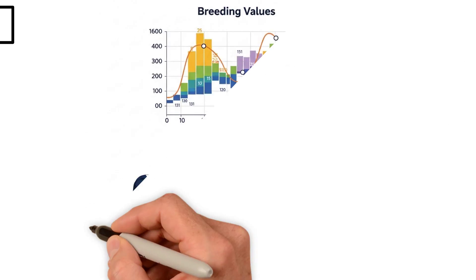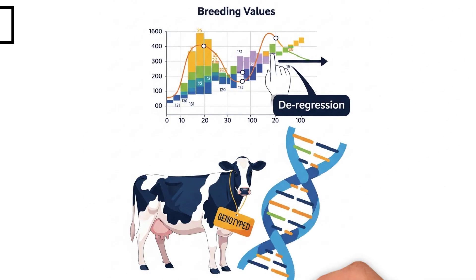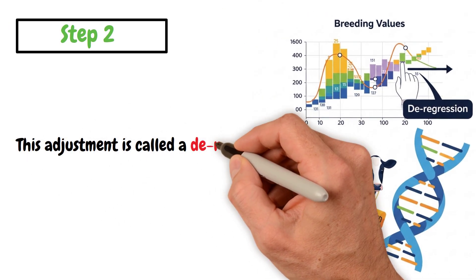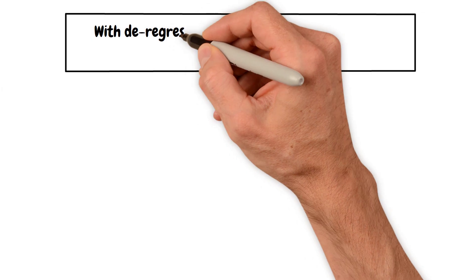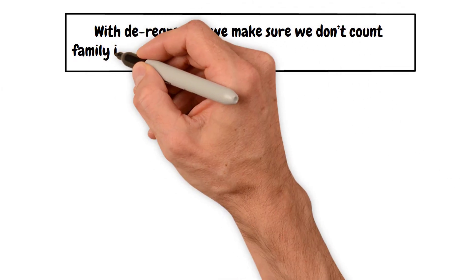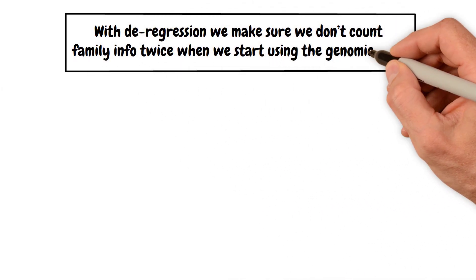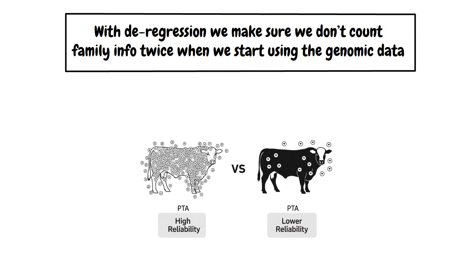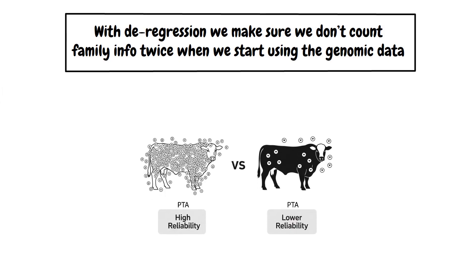Step 2: For genotyped animals, we then transform the breeding values to become proxy phenotypes again. This adjustment is called a deregression. With deregression, we make sure we don't count family info twice when we start using the genomic data. We also account for the fact that some bulls have more data than others, like daughter information.